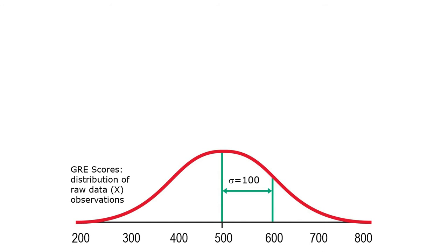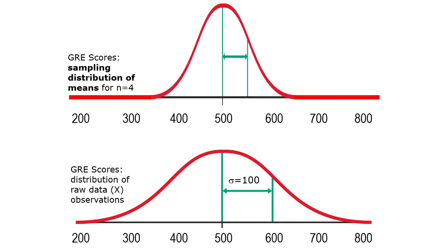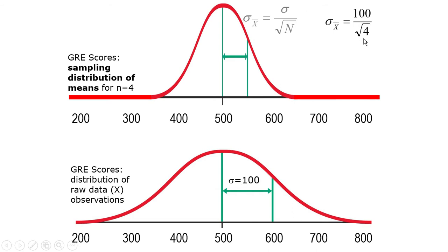So it has a known population and known population characteristics. What's the sampling distribution of means for n equals 4 from this population? That sampling distribution is going to look a little bit skinnier, because the sample size tells you how big the standard deviation should be. The standard deviation of this sampling distribution of means is 100 divided by the square root of the sample size — the square root of 4. So in this case it's 50.